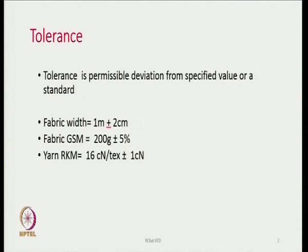Similarly, for fabric GSM it could be 200 grams plus or minus 5 percent, or yarn RKM could be 16 centi-Newton per tex plus or minus 1 centi-Newton. The tolerance can be expressed in the same units or sometimes in percentage terms.